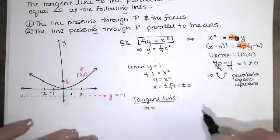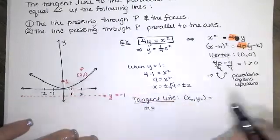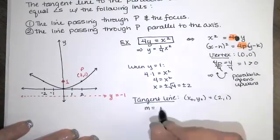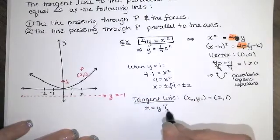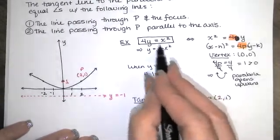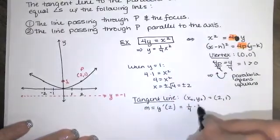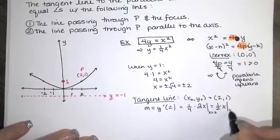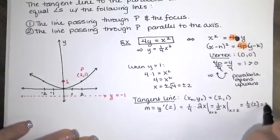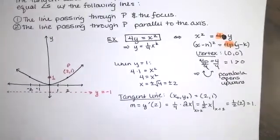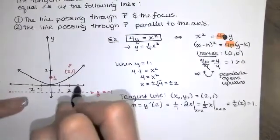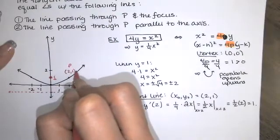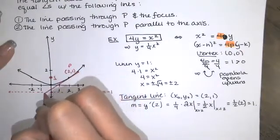To find the equation of the tangent line, we need a slope and a point on the line. When x is 2, y is 1 — we already have a point. The slope is the derivative of the function evaluated at x equals 2. The derivative of one-fourth x squared is one-fourth times the derivative of x squared, which gives one-half x. Evaluated at x equals 2, that's one-half times 2, which equals 1. So I have a line with slope 1 passing through this point. From this point, I go up 1 and over 1 to find another point on the line.